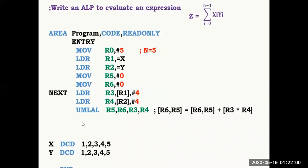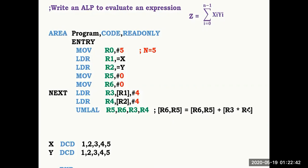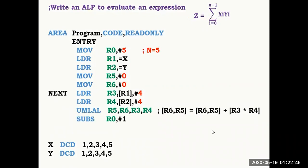UMLAL — Unsigned Multiply and Accumulate Long — multiplies R3 and R4. With R3=1 and R4=1, 1×1=1. Adding R5 and R6 (both initialized to 0), the result is 1. This result is saved in R5 and R6. So one multiplication is completed: R5 and R6 now hold the accumulated value.